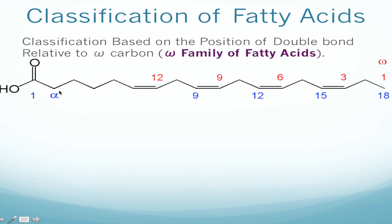There is another way to name carbons: the second carbon is called alpha, the third is beta, and the fourth is gamma — that is the alpha-beta-gamma numbering. There is also the omega system, starting from the methyl end. The methyl carbon is omega-1, then omega-2, omega-3, omega-4, omega-5, and so on. The red-colored numbers you see here are the omega numbering.